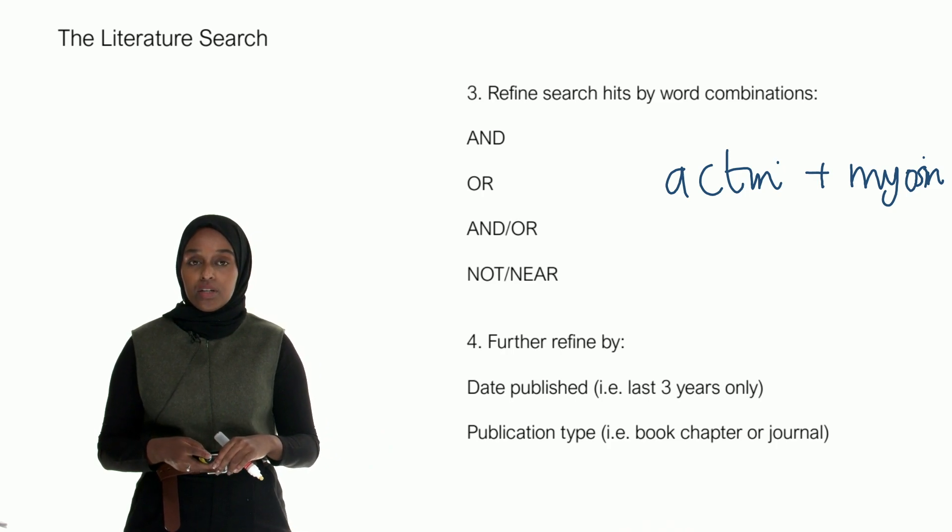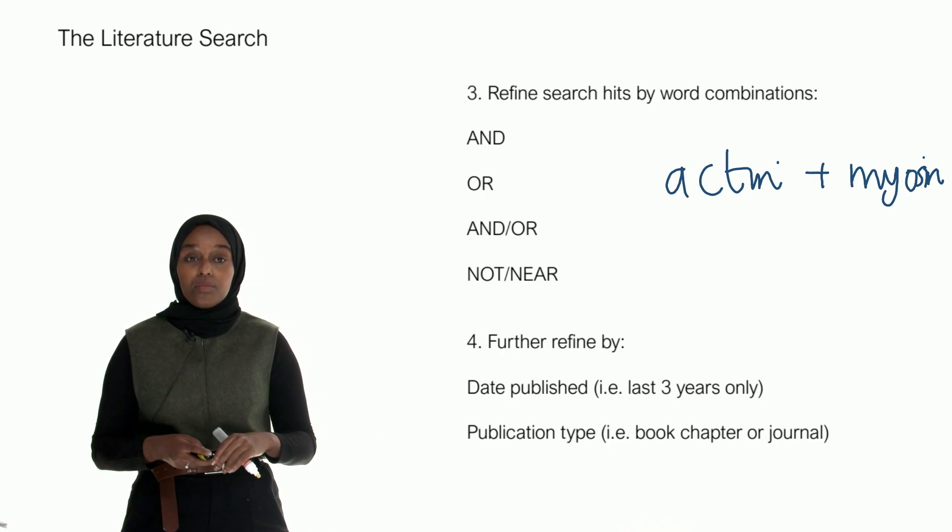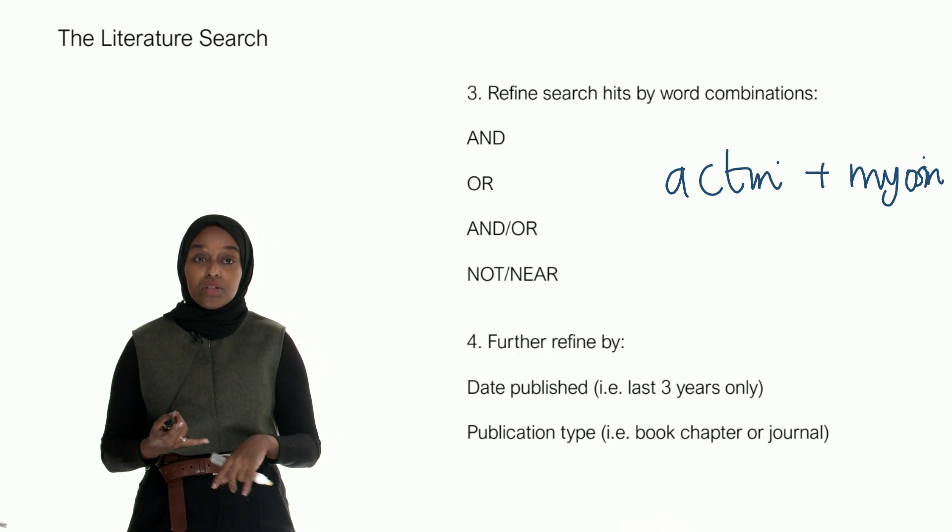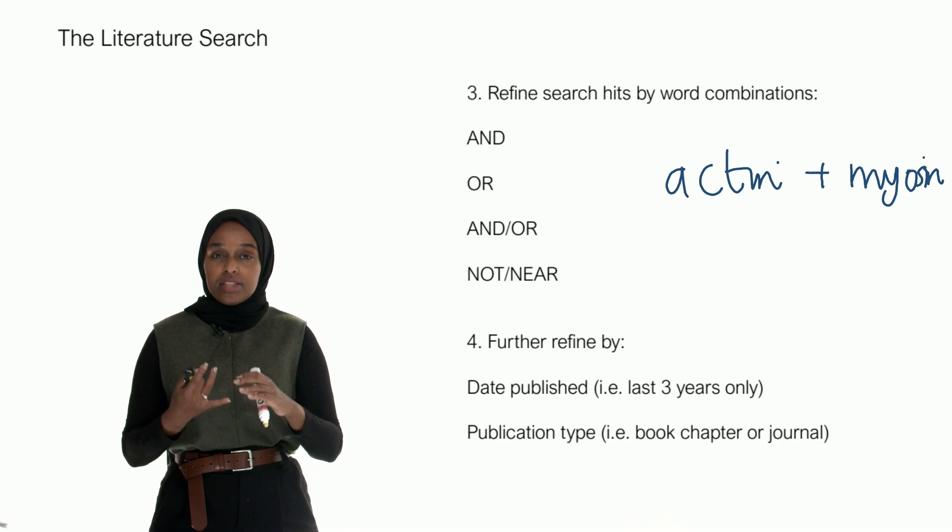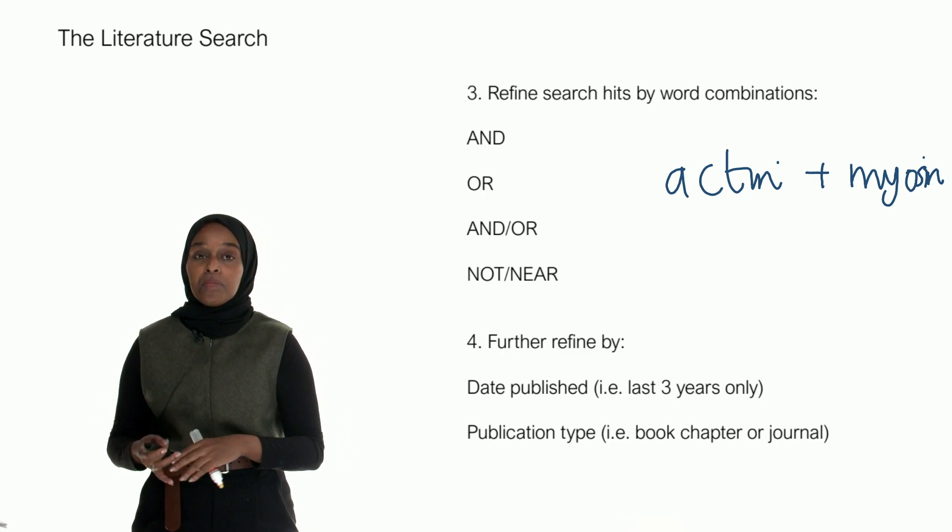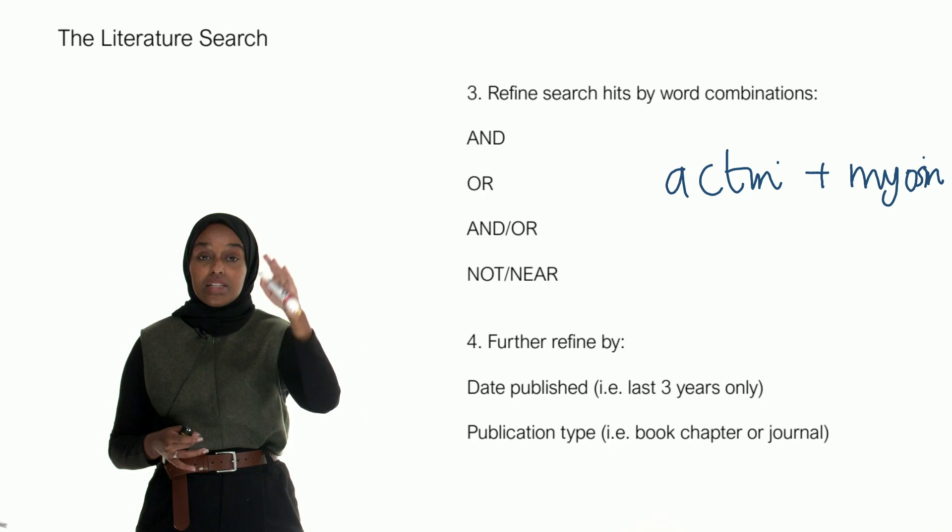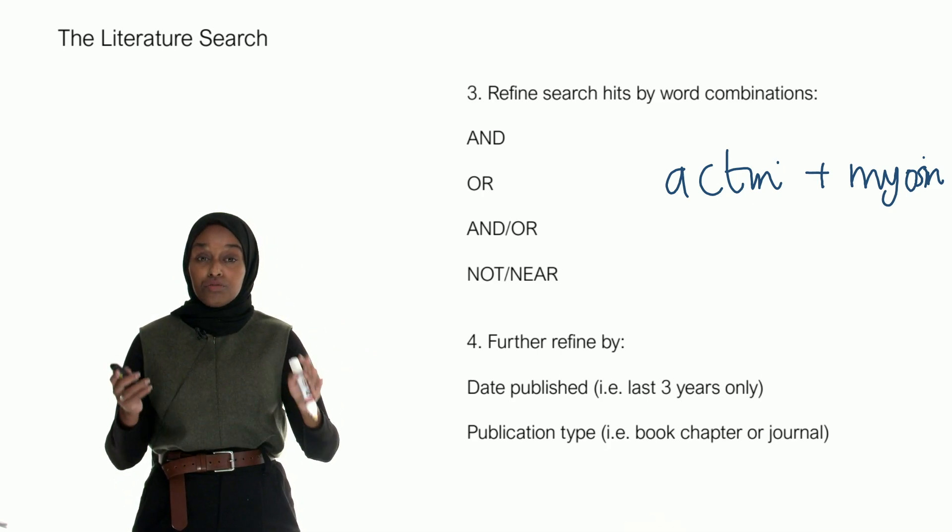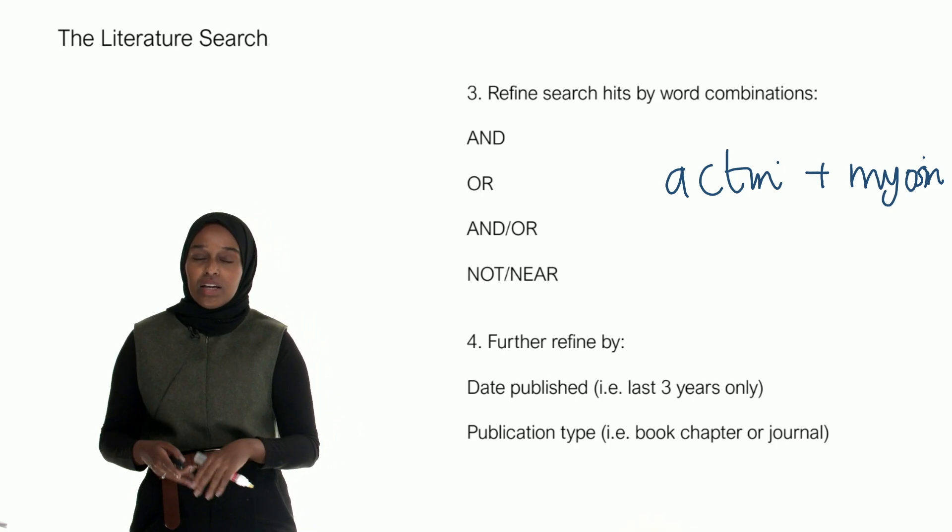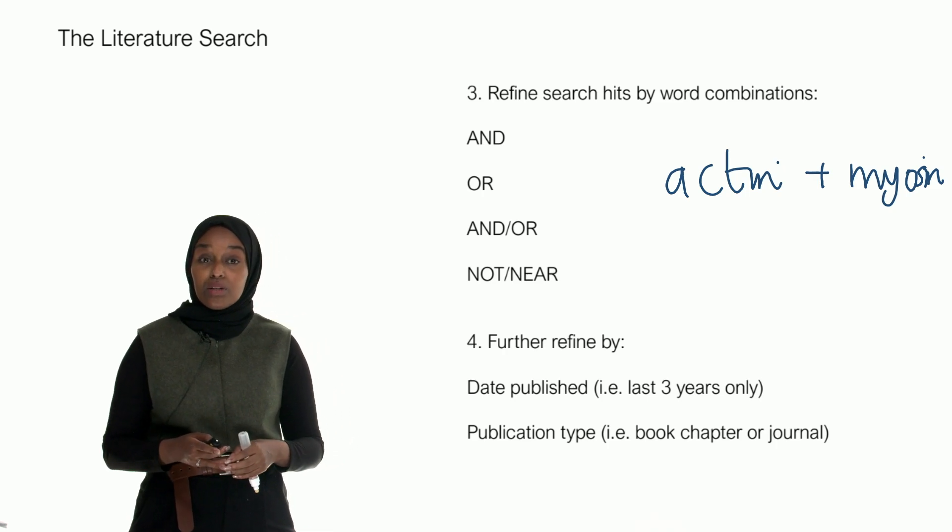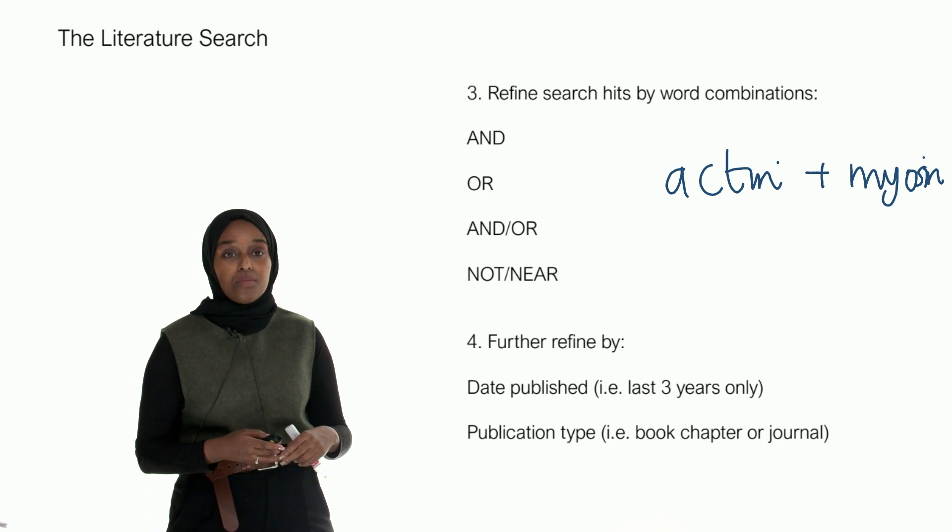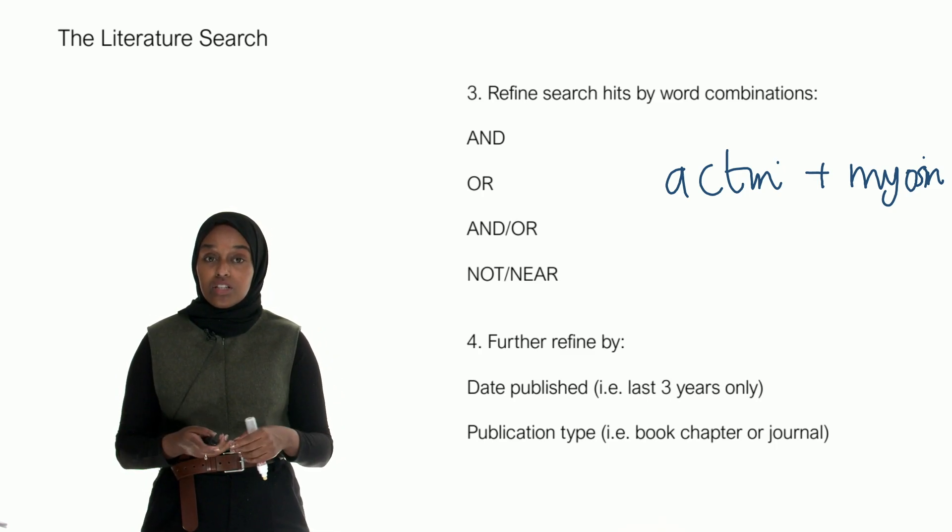And then publication type - book chapters or journals - you can even refine those to find specific review papers only. Review papers really can summarize everything. What you can do is look at a review paper, look at what they've written about, go to the references in that review paper, and then do your own research and expand on that yourself. It's a bit of a shortcut because they've kind of done the work for you.